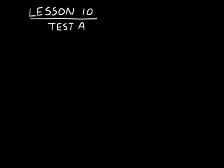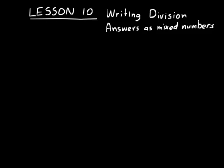Before you start lesson 10, make sure you complete test A in the test masters. And also you should be doing the mental math and problem solving steps at the beginning of the lessons as well. Lesson 10 has two parts and the first part is on writing division answers as mixed numbers. In other words, instead of writing them with a remainder, we'll write a fraction instead of the remainder.